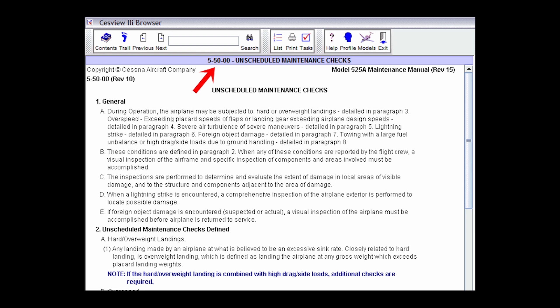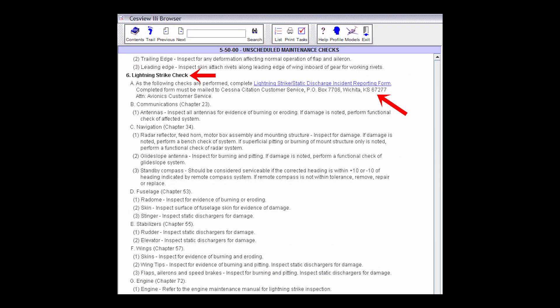The first thing you'll want to do after your aircraft has experienced a lightning strike is review Chapter 5-50-00 of the maintenance manual. This will cover the unscheduled maintenance check and inspection items of a lightning strike. This section of the manual will cover inspections for various structural members of the aircraft including the fuselage, stabilizers, and wings.